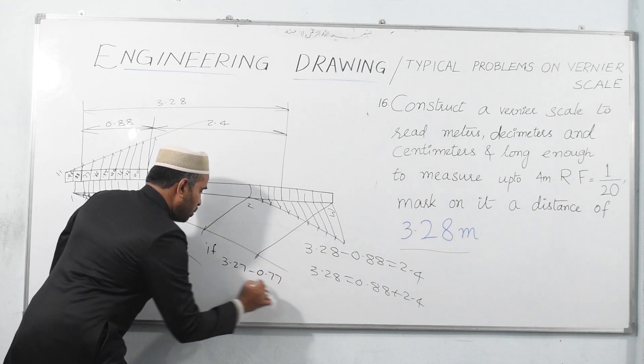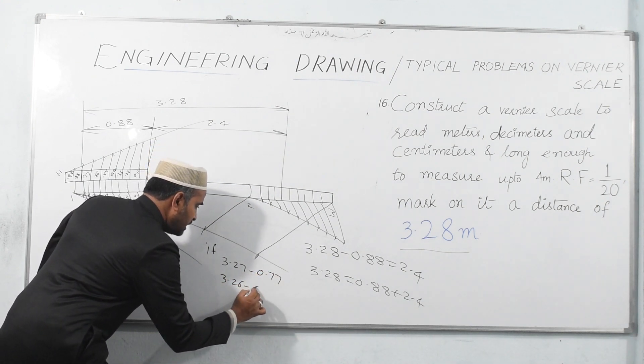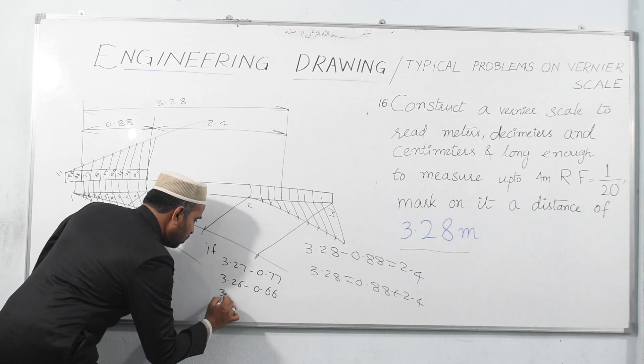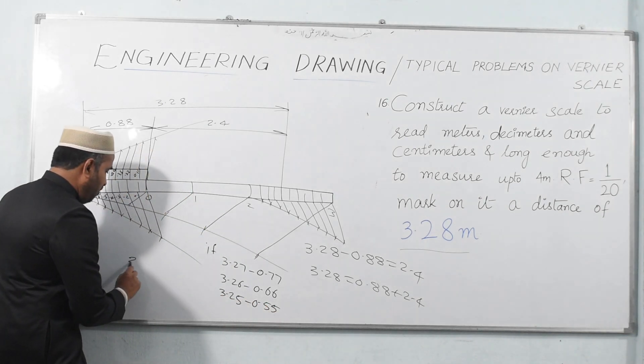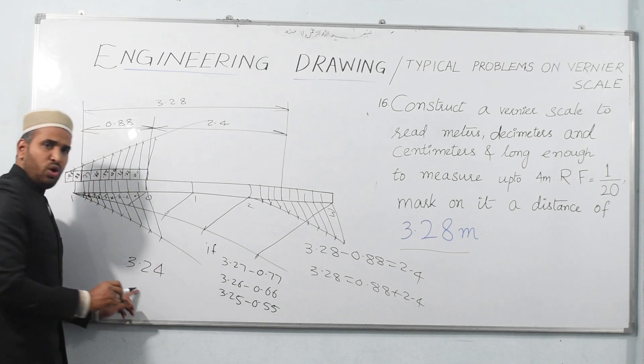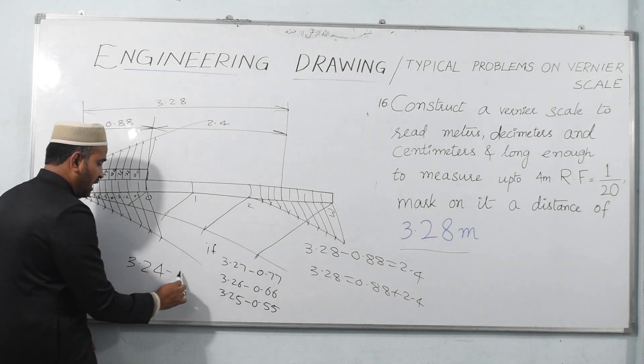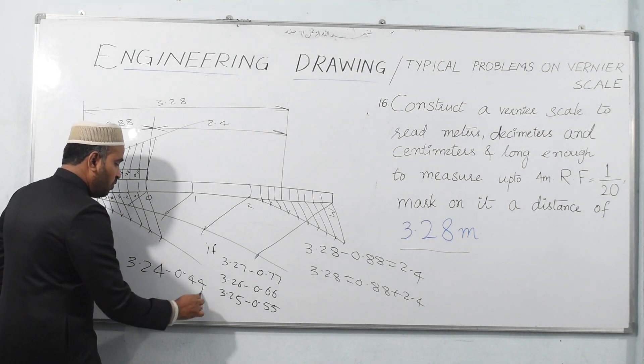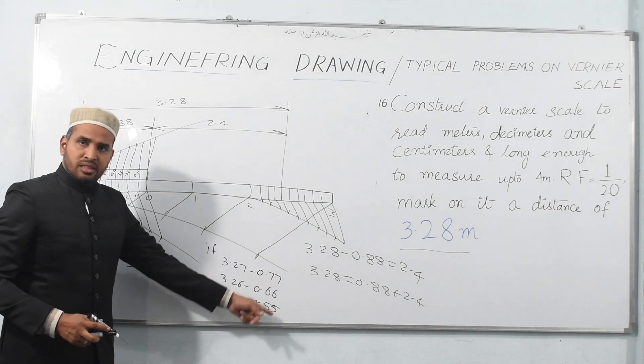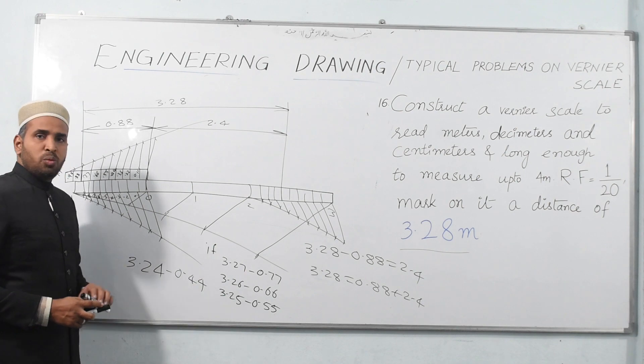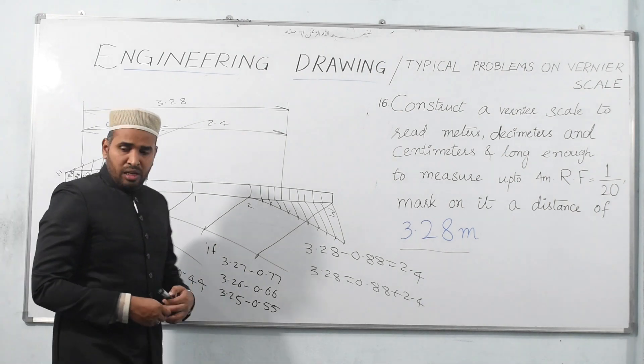3.26 would be 0.66, 3.25 would be 0.55. So if it is 3.24, what is that you will subtract? Yes, your answer will be 0.44. The last digit, the last digit is of utmost importance.